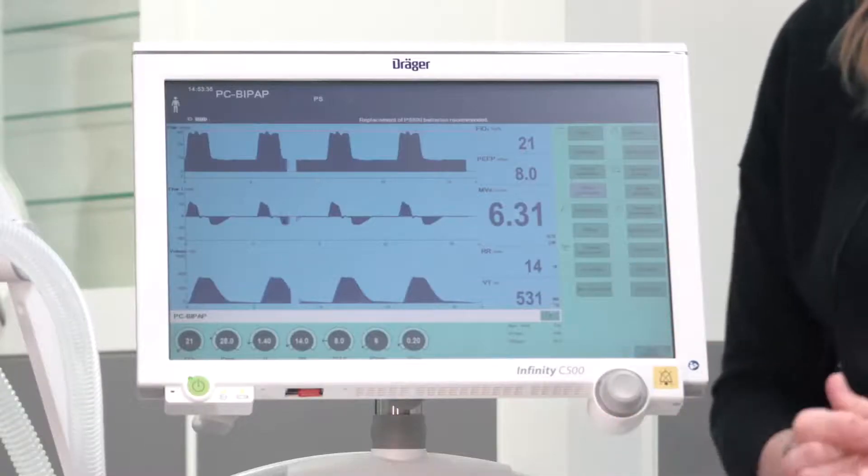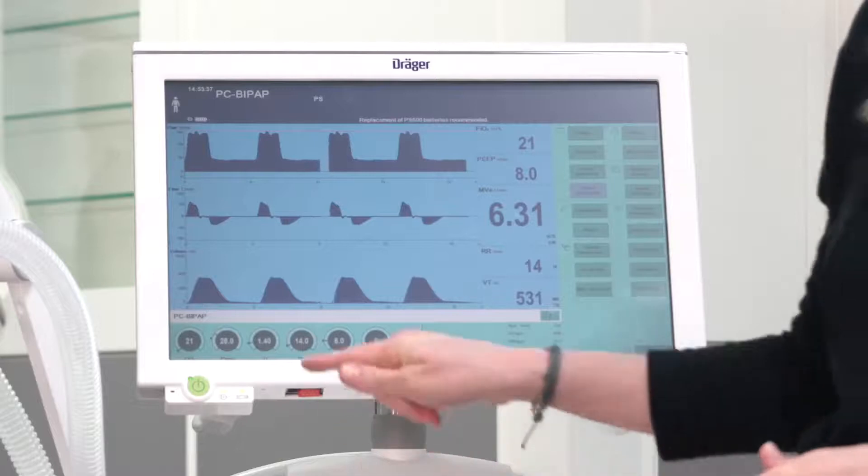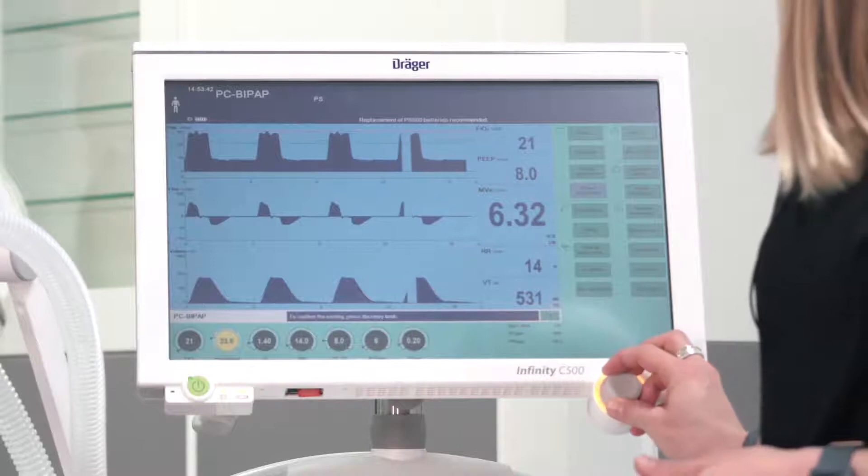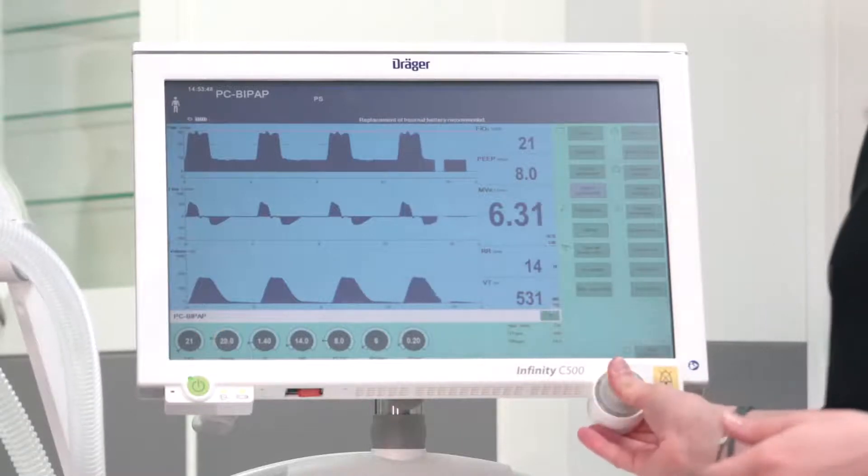To apply changes to your ventilation parameters, select the respective parameter, adjust it to the desired value and confirm by pressing the rotary knob.